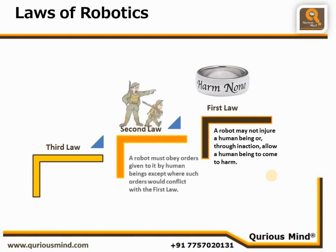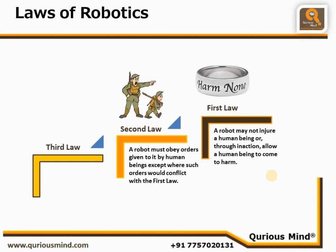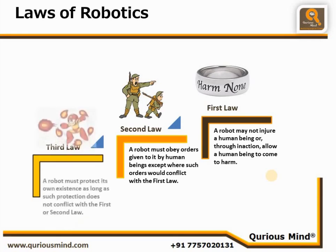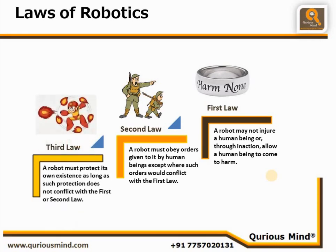Law 2 states that a robot must obey orders given to it by human beings, except where such orders would conflict with the first law. This is very simple to understand — a robot does what its master programs it to do, unless it conflicts with the first law. Law 3 states that a robot must protect its own existence as long as such protection does not conflict with the first or second law. Here we acknowledge that the robot is also important and design must take care of the robot itself, but master comes first and then the robot.